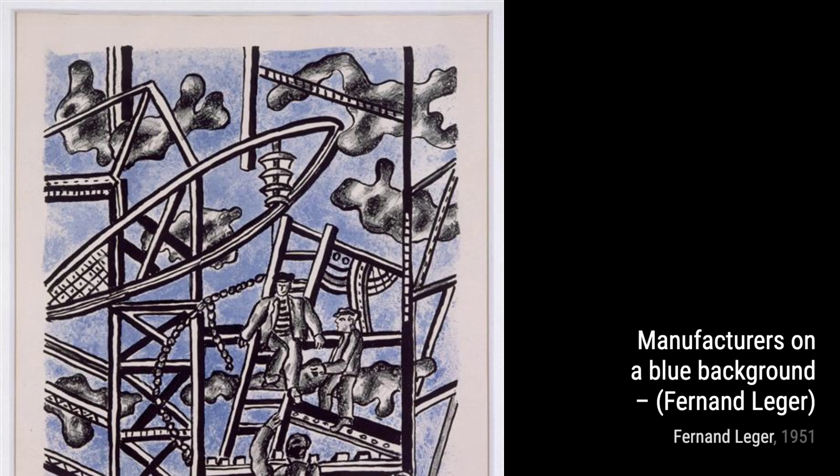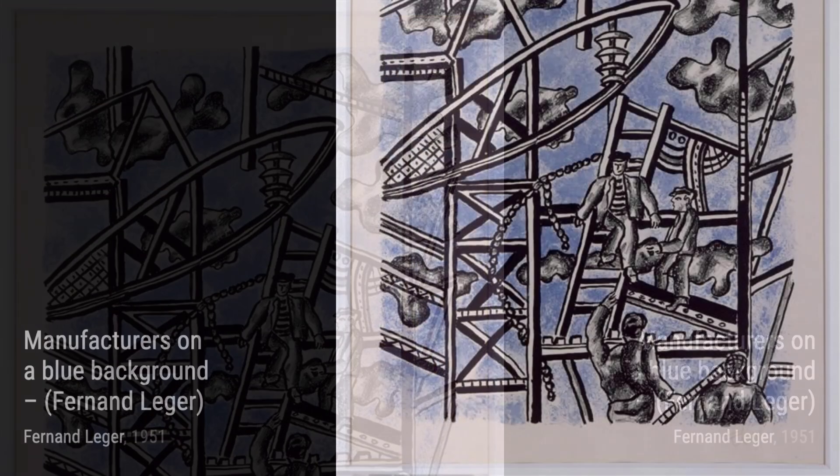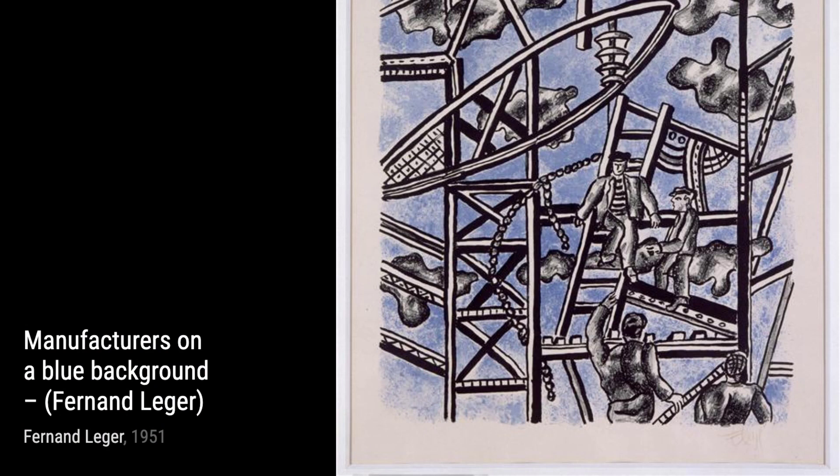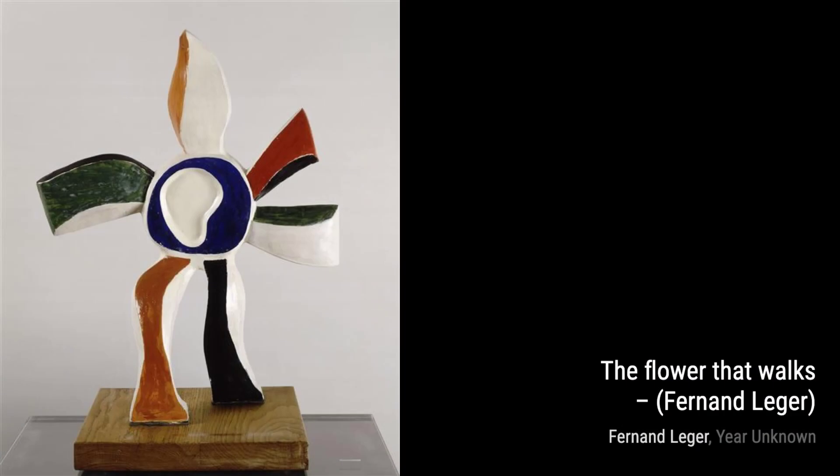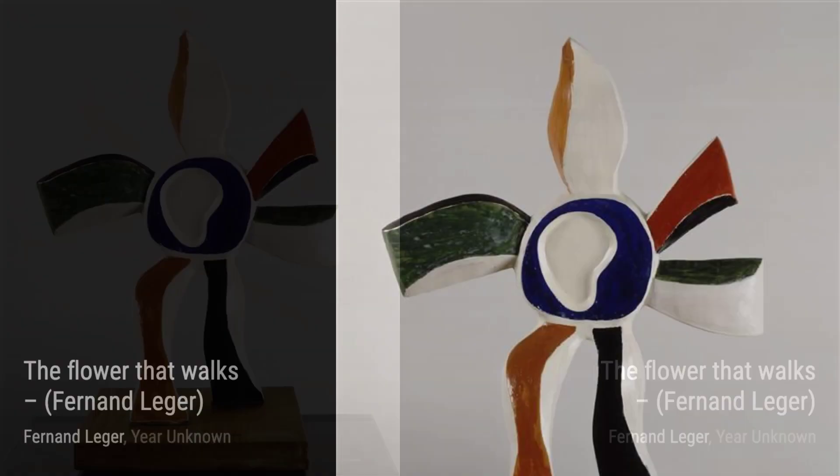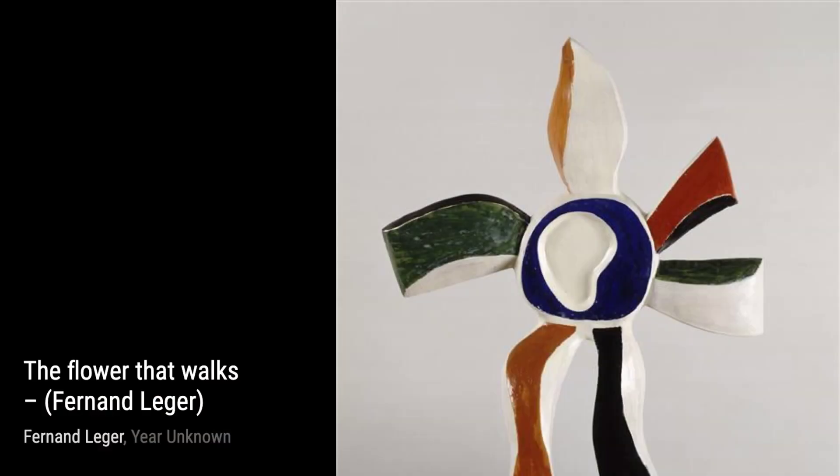In The Woman and the Flower, Léger explores the relationship between femininity and nature. The soft lines and delicate colors create a sense of beauty and grace. Finally, we have The Woman in the Mirror. Léger's depiction of the female figure is both powerful and introspective. The bold lines and simplified forms give this painting a sense of strength and confidence.